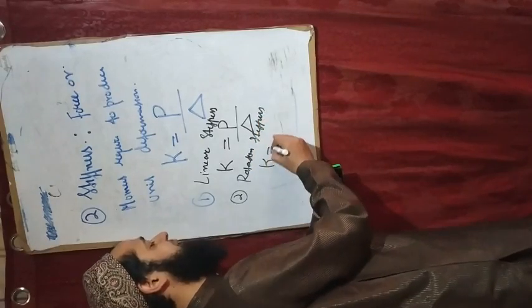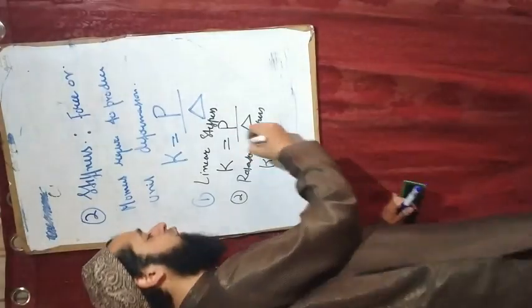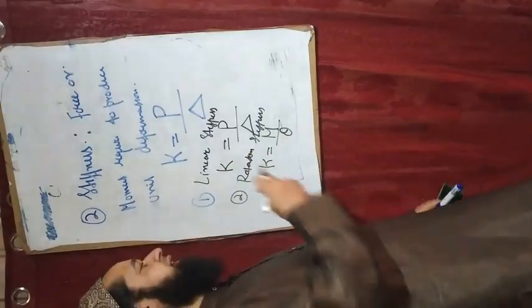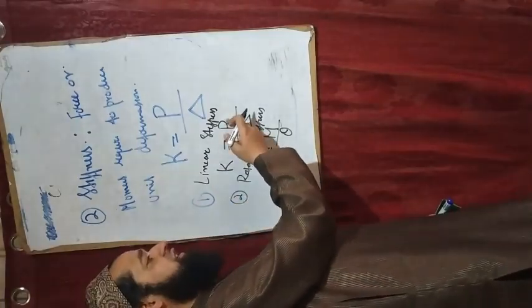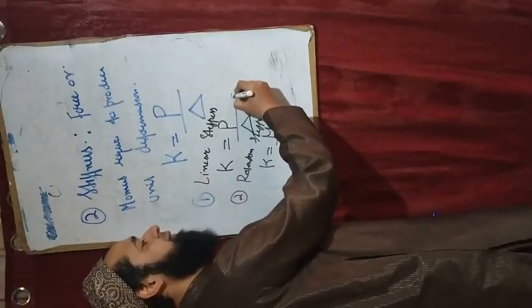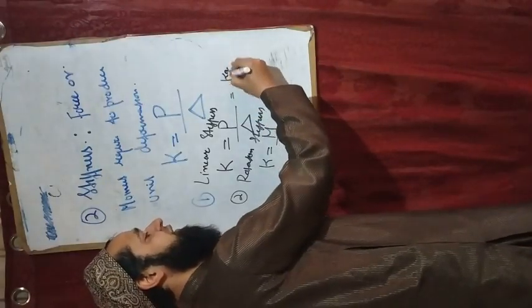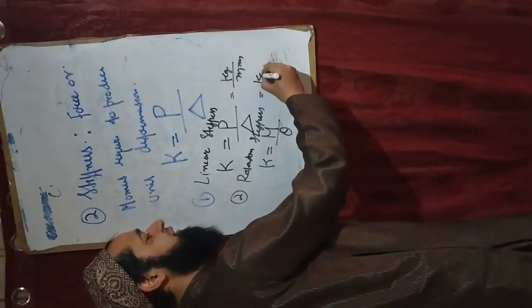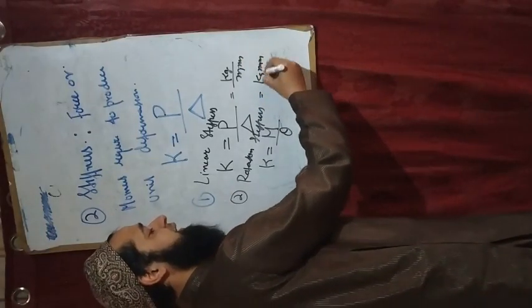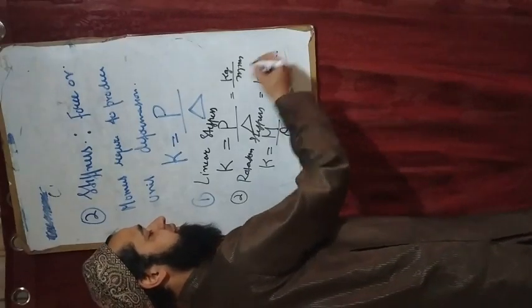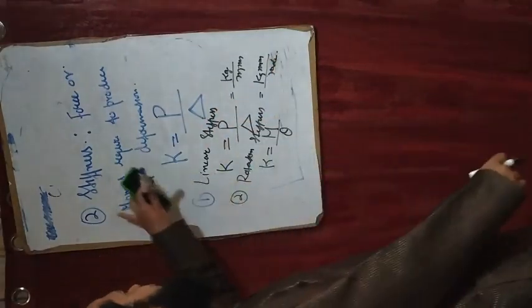Rotational stiffness is the moment required to produce unit rotation. Similar to linear stiffness — force by displacement — rotational stiffness is moment divided by rotation. If we write the units: for linear stiffness it is kg per meter or kg per mm; for rotational stiffness it is kg·mm divided by radians. This is stiffness.